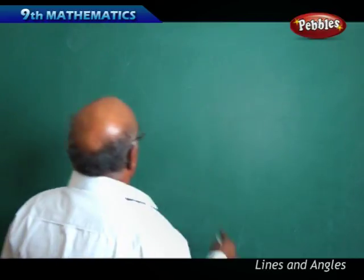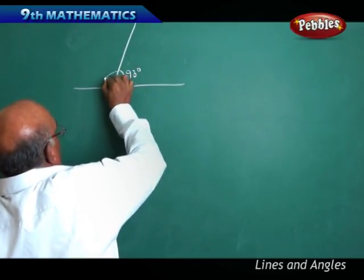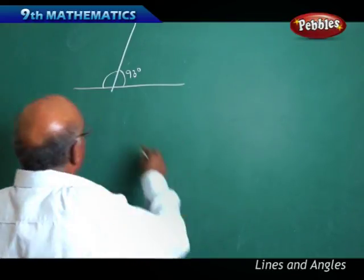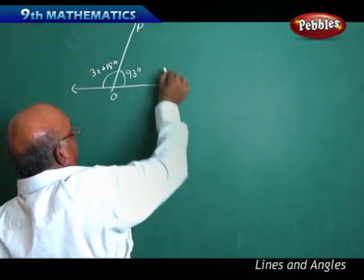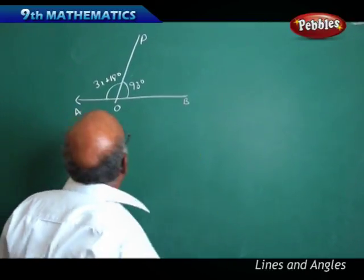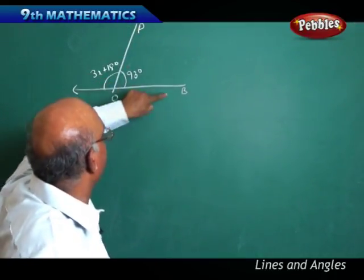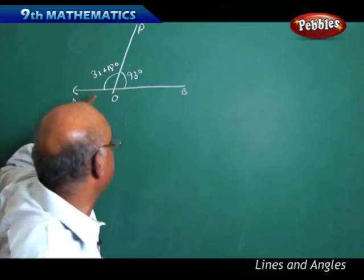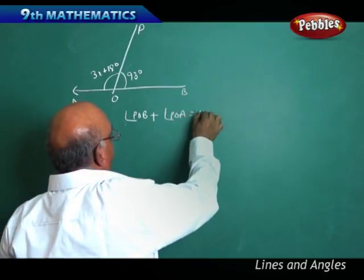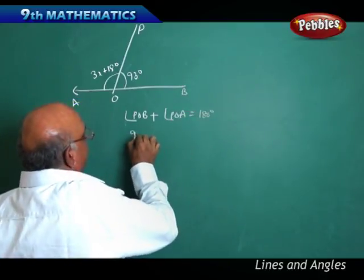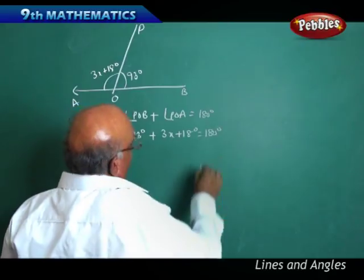Next problem: we have a figure with one angle of 93 degrees and another angle equal to 3X plus 18 degrees. This is line OP and line AB. We want to find X. Since angle POB plus angle POA equals 180 degrees, we write 93 degrees plus 3X plus 18 degrees equals 180 degrees.